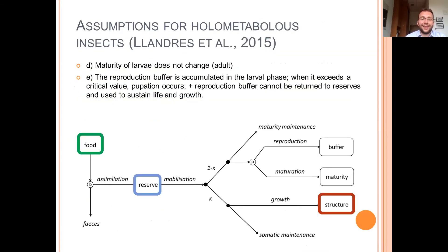From the DEB model for holometabolous insects, we knew that maturity of larvae does not change and larvae is an adult in a DEB context. The reproduction buffer is accumulated in the larval phase and when it exceeds a critical value, the pupation occurs.